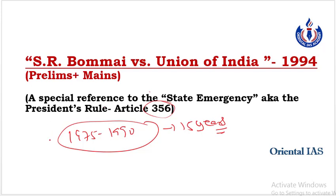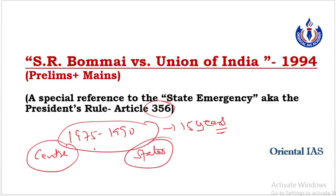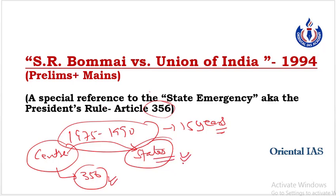Kyun use kiya gaya? Uska logic bahut simple hai - kyunki center mein ek doosri party thi aur states mein doosri parties thi. Parties mein ideological clash tha aur center ke paas Article 356 ek weapon ki tarah tha, jise wo states ko punish karne ke liye use kar sakte the. Ab sawal uthta hai ki Article 356 mein hota kya hai.